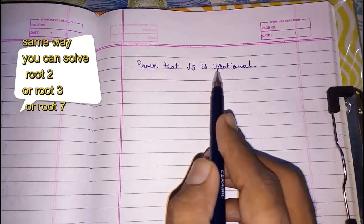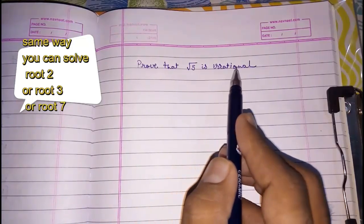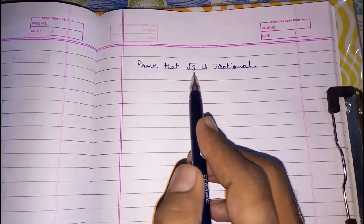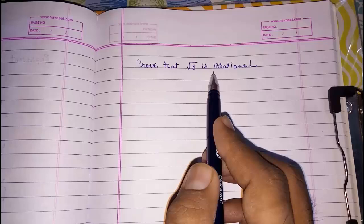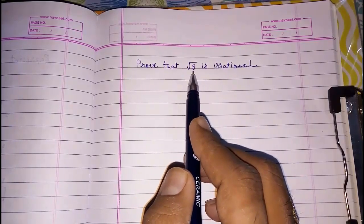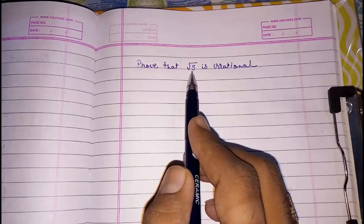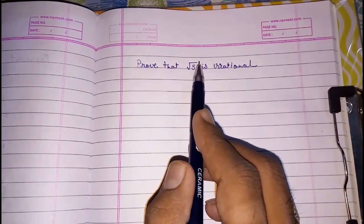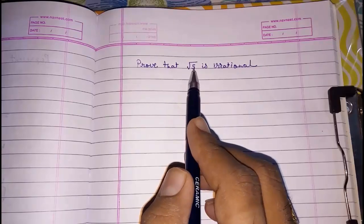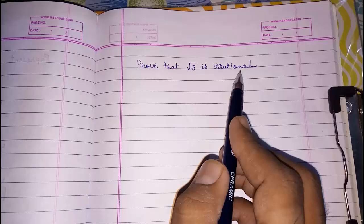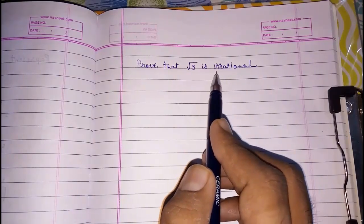Directly we cannot prove that root 5 is irrational. So we are going to first assume that root 5 is rational, and then we are going to find some mistakes, so that we come to know that root 5 is not rational. So if root 5 is not rational then automatically it will become irrational. This is called a contradiction method.